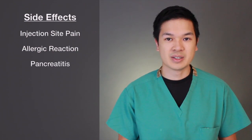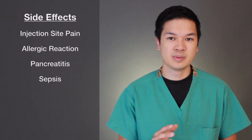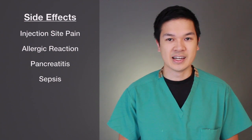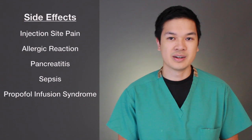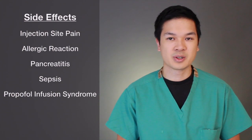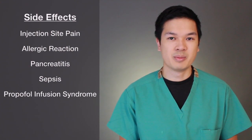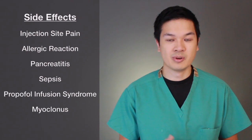Propofol carries a risk of postoperative pancreatitis due to hypertriglyceridemia, and bacteria may grow in Propofol. The recommendation is to not use it after it's been drawn up in a syringe for longer than six to eight hours. Propofol infusion syndrome is a major concern for patients on high dose infusions in the ICU, generally greater than 150 to 200 micrograms per kilogram per minute. The clinical picture typically presents as bradyarrhythmias, asystole, metabolic acidosis, rhabdomyolysis, and hyperlipidemia. Propofol can also rarely cause myoclonus or thrombophlebitis.